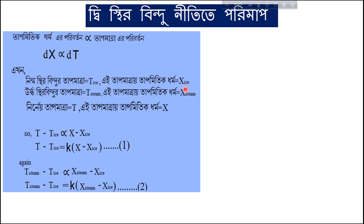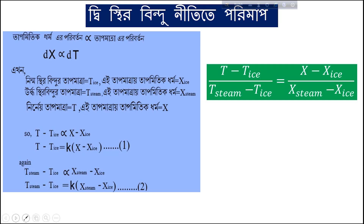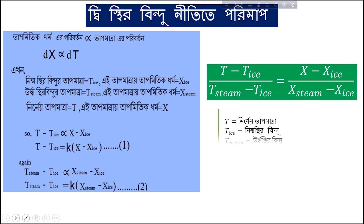Now, if there is no temperature difference between the thermometer and the object, there will be no thermometric property difference either. When they reach thermal equilibrium — when both have the same temperature — then our target is to extract that unknown temperature value. But as we know, if we want the lower fixed-point temperature value...